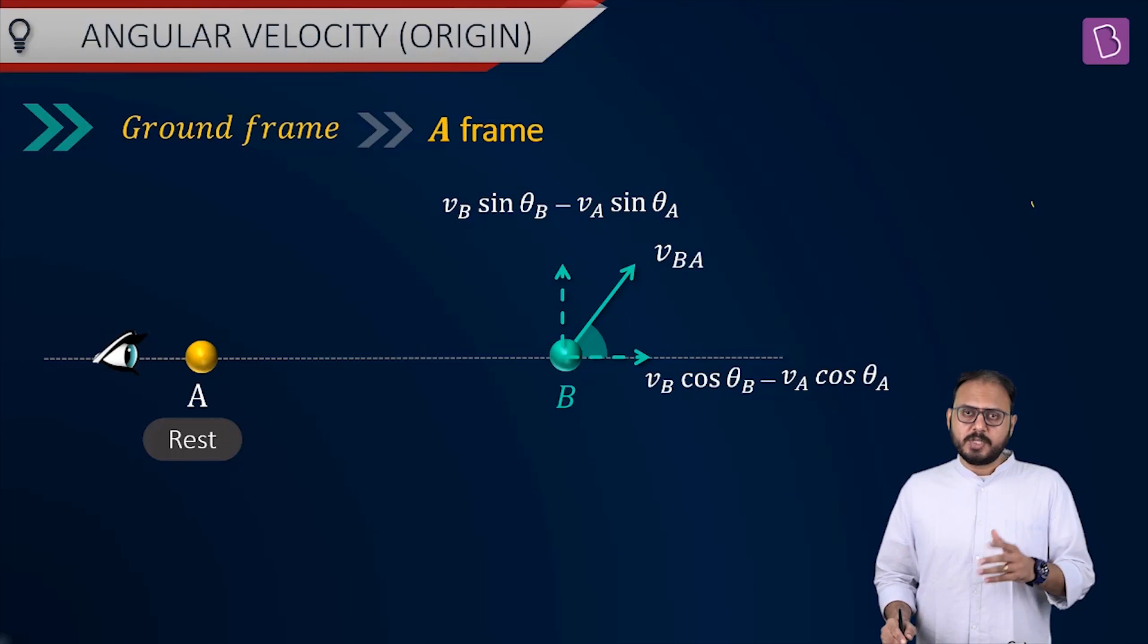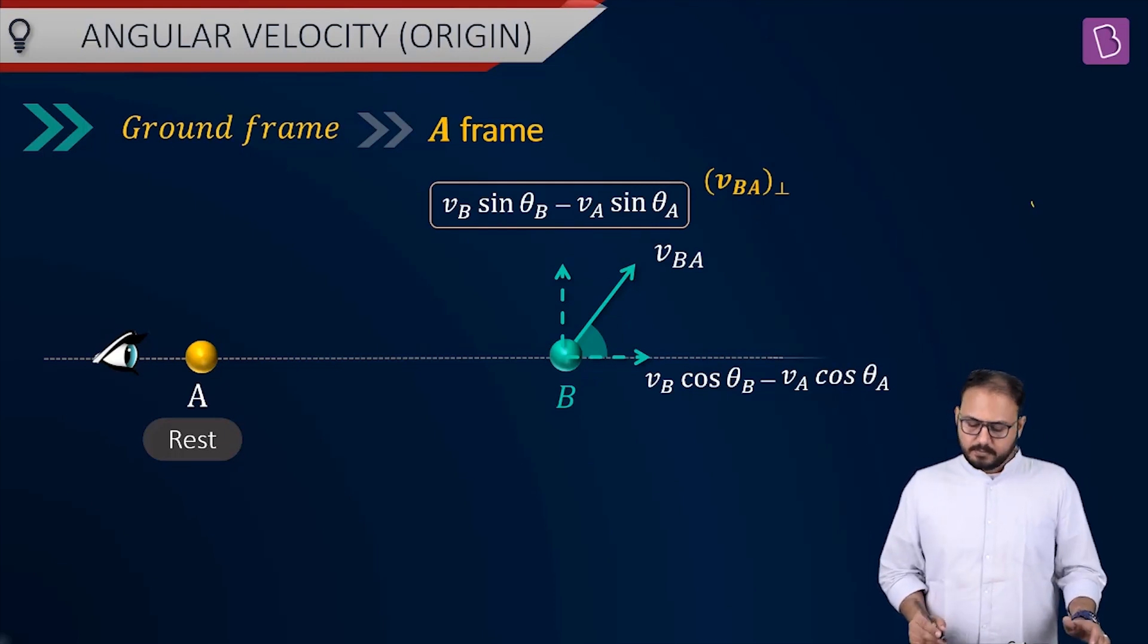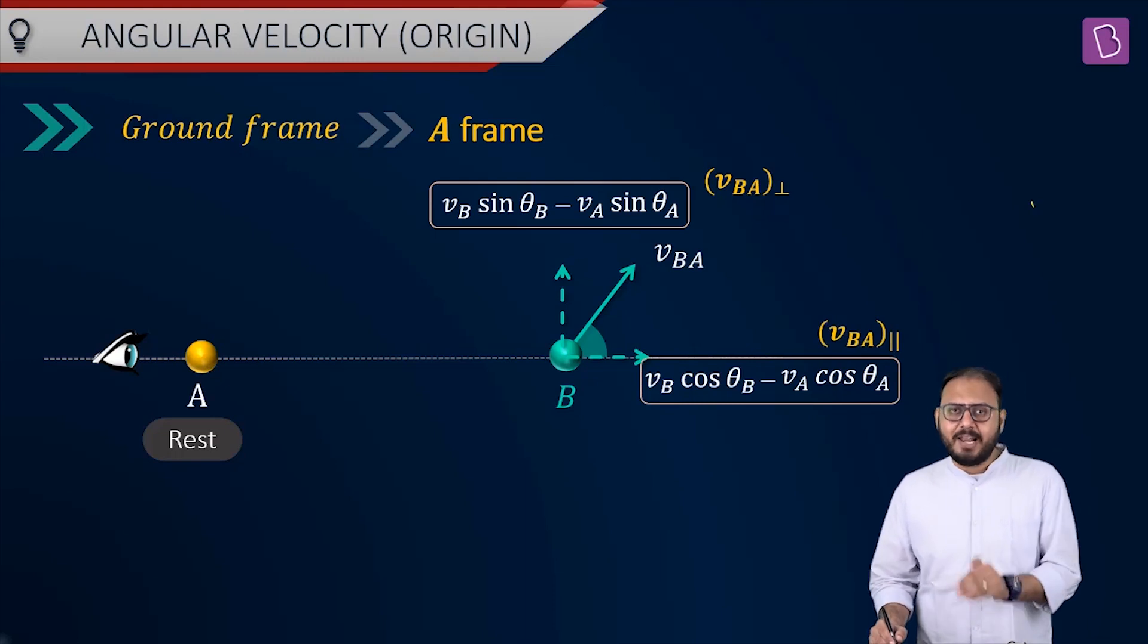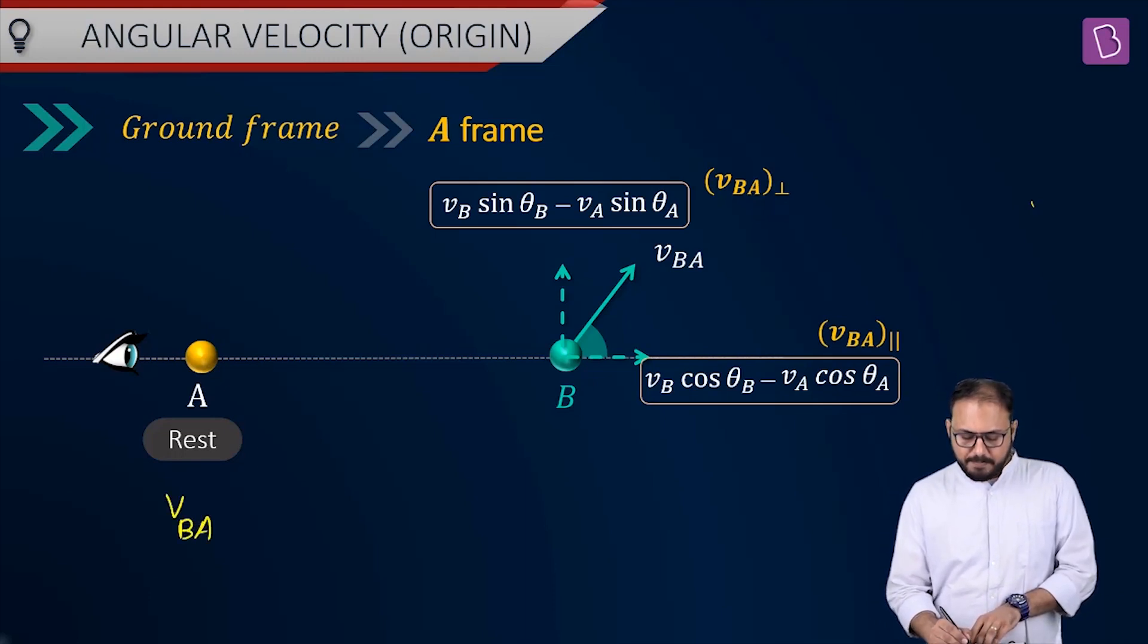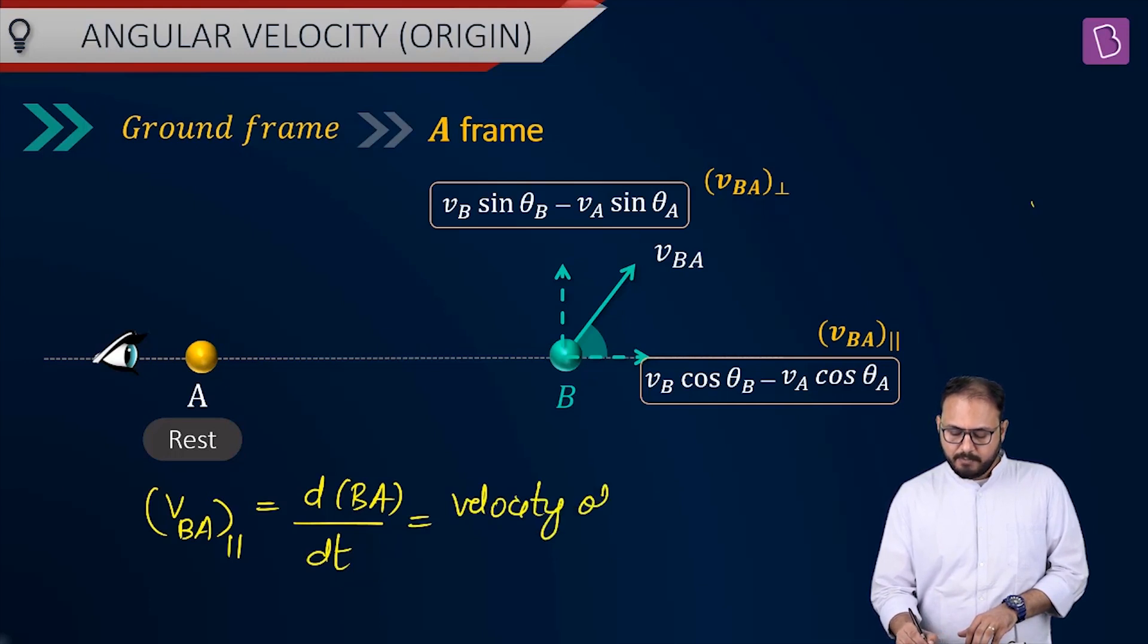So, you are on A, the observer. We are observer. We are looking at B from A. Look at the two components. This component is vba perpendicular. Why? Because it is perpendicular to va. The other one is the component which is parallel to va. Do you recall this component? vba parallel which was nothing but the rate at which the va changes, isn't it.